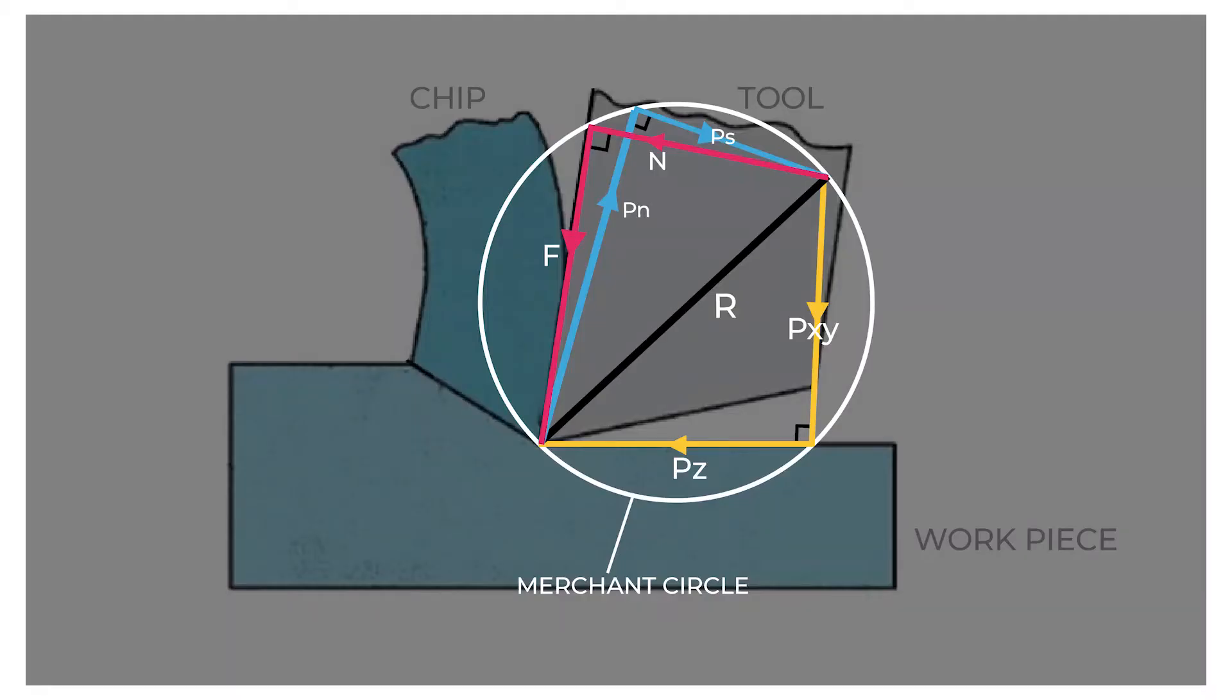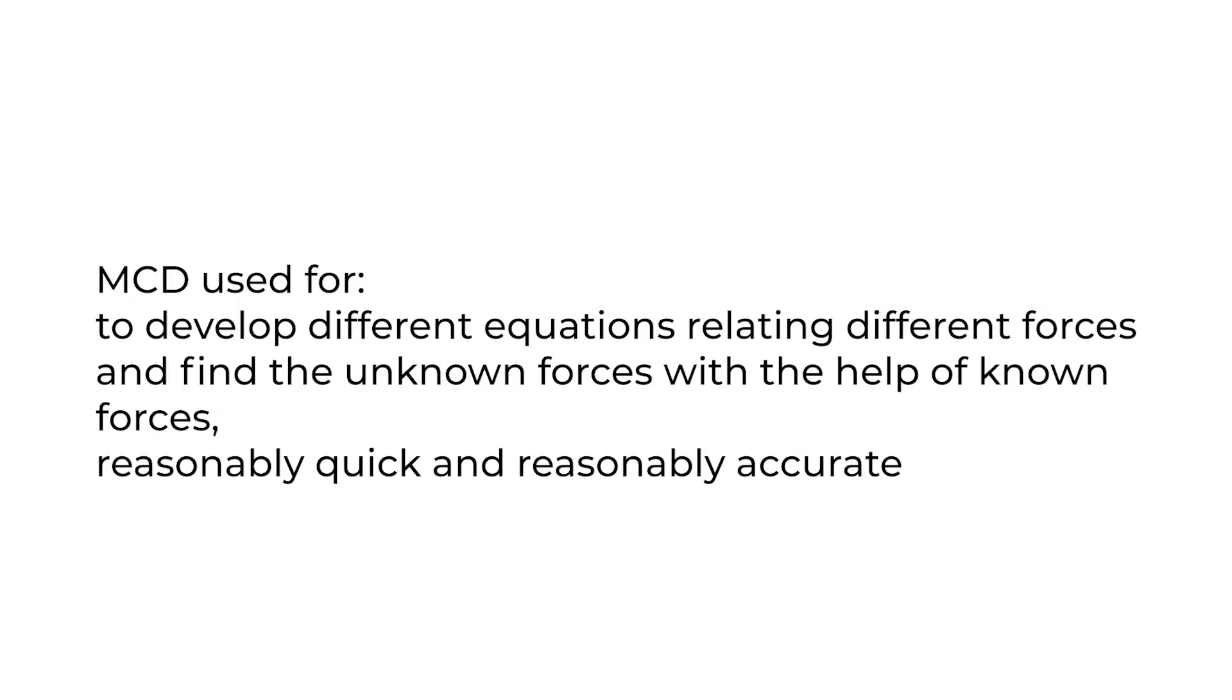So the resultant forces R and R1 must be equal, and that's how we use equilibrium to combine all these six forces inside one circle. It is called merchant circle. We can use merchant circle diagram to develop different equations relating different forces and find the unknown forces with the help of known forces. Reasonably quick and reasonably accurate.